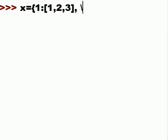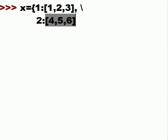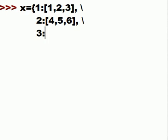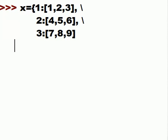Using line continuation characters, I continue the dictionary definition. Key two has the value four, five, six. And key three has the value seven, eight, nine.